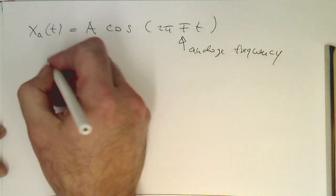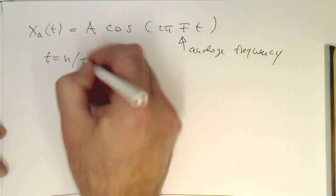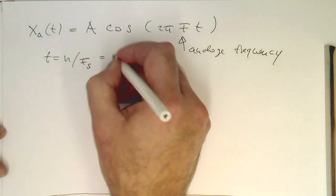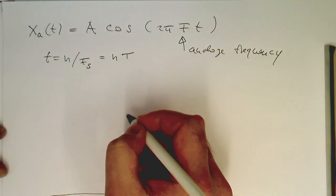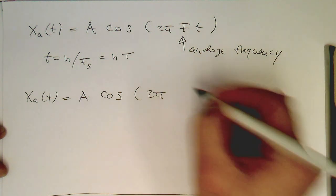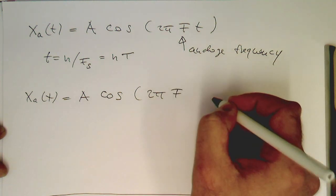So now, remember, if we sample this, so our t is essentially n divided by fs, by our sampling rate, or n multiplied by t, by our sampling interval. So we can turn this into xA of t, a cosine, and then 2 pi. So we've got our analog frequency f here. And now we substitute the t in here as n divided by fs.